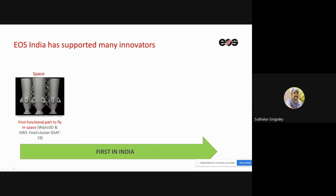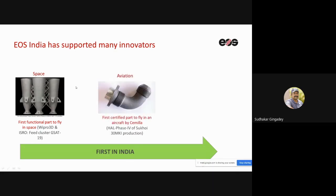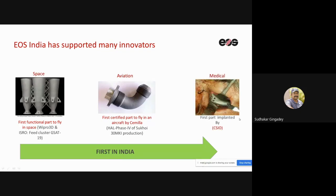EOS India has notable achievements: the first 3D-printed part for ISRO's GSAT-19 feeder cluster, currently in orbit; a certified part for the Sukhoi-30 aircraft; and more than 250 medical implants designed and implanted in humans across various cases, with all patients safe and healthy.